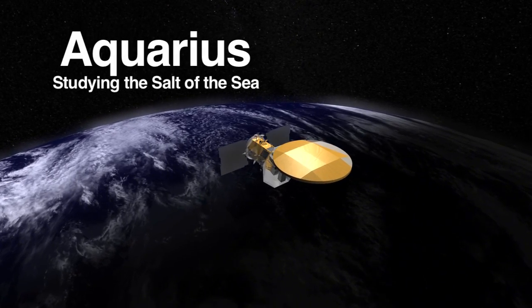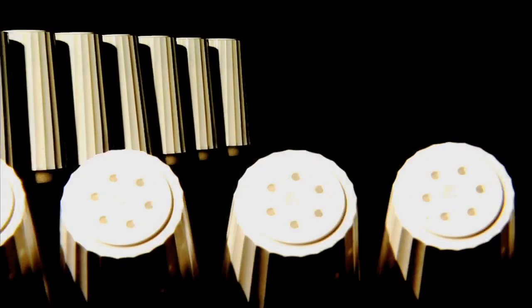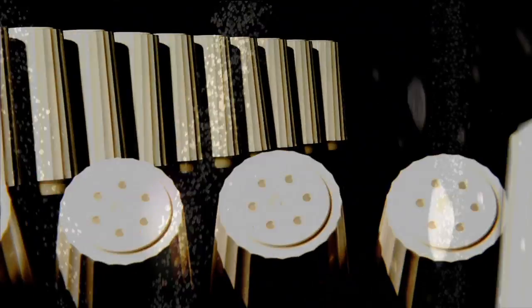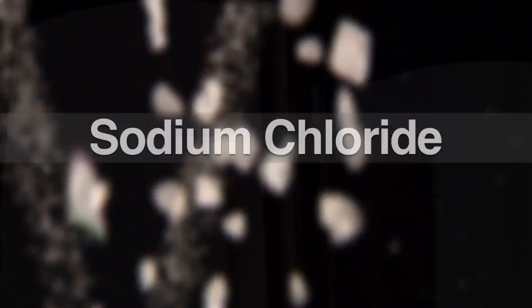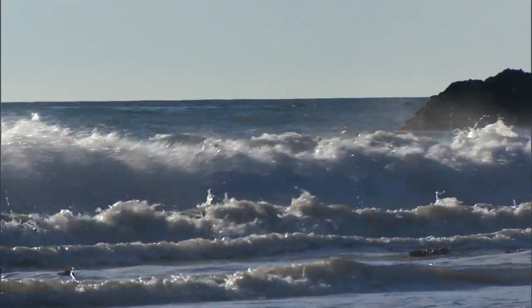When we're talking about salt in the ocean, we're talking pretty much the same salt that you use in cooking. It's a chemical known as sodium chloride. You've been to the beach, you've gone swimming in the ocean — you know that the ocean is salty.